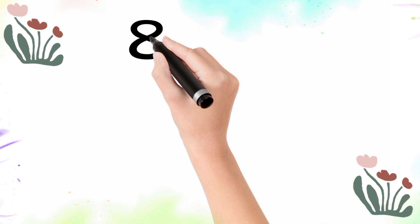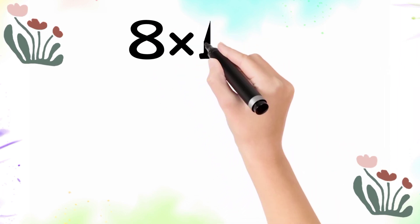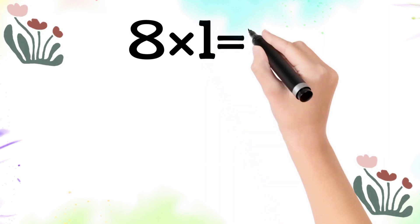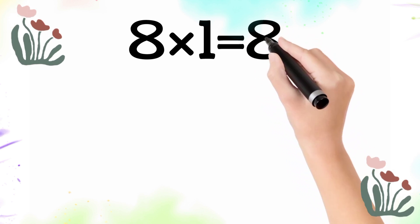8 multiplied by 1 is equal 8. So 8 times 1 is 8.